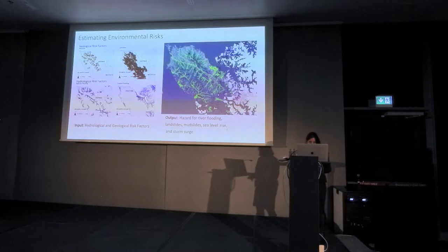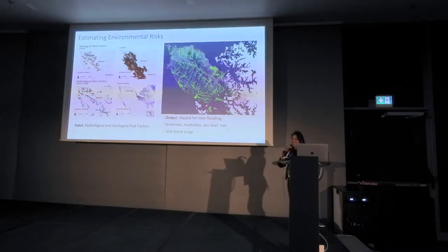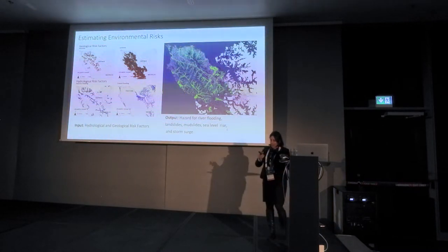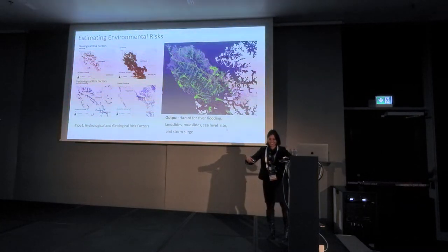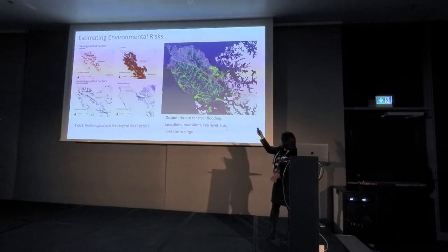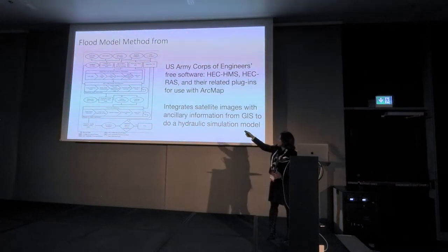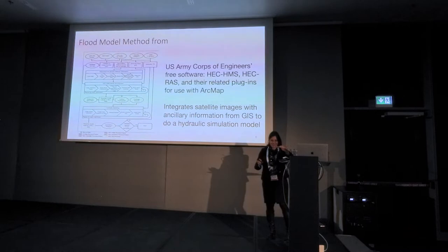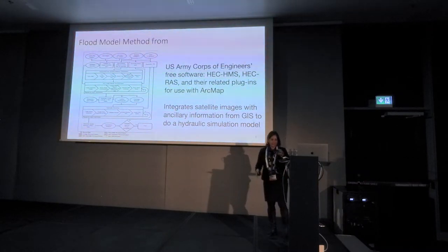What we did was gathering different information on the geological risk factors, hydrological risk factor landslide, and coast and landslide. It's not a particularly sophisticated machine learning process — it was state-of-the-art conditions to estimate vulnerable places in the region. We did the hazard for river flooding layer using standard techniques. The keyword here is the US Army Corps of Engineering Software. That was not our contribution.